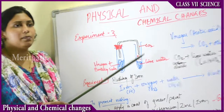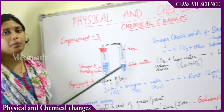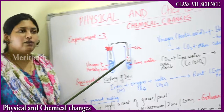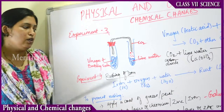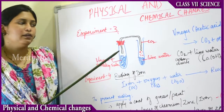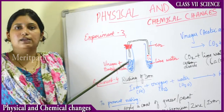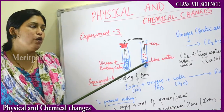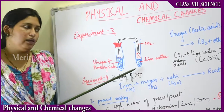The gas produced with the help of vinegar and baking soda was passed through the tube into the lime water. The gas turned the lime water milky in color. When vinegar and baking soda were mixed, they underwent a chemical change and produced carbon dioxide gas. When this carbon dioxide gas was passed into the lime water, the lime water turned milky in color.